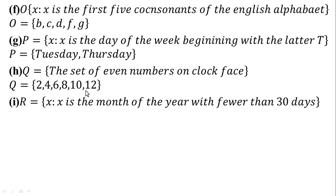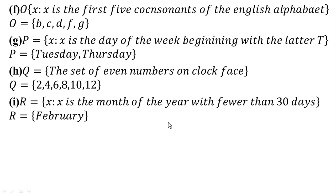In part I, R = {x : x is the month of the year with fewer than 30 days}. Fewer means less than. We write the month of the year with fewer than 30 days. Only one month has fewer than 30 days. So the answer for part I is R = {February}.